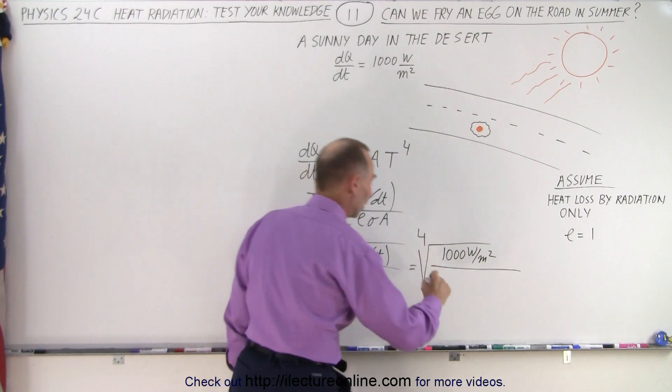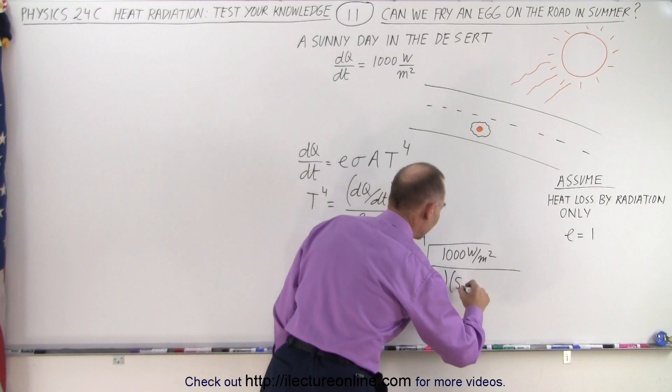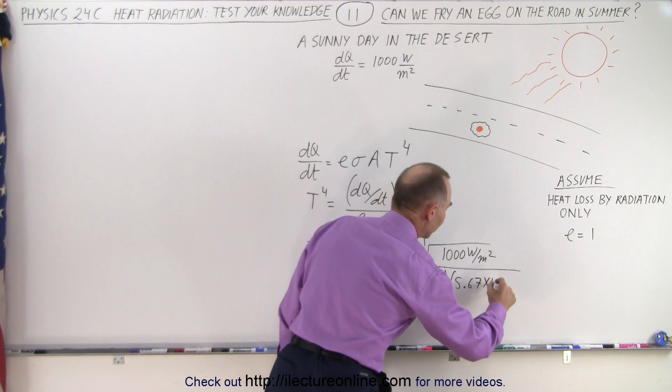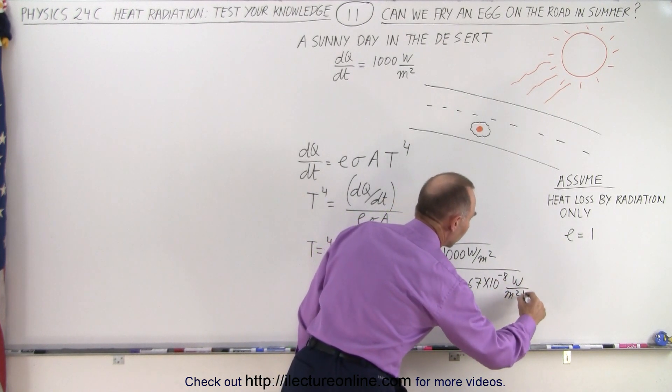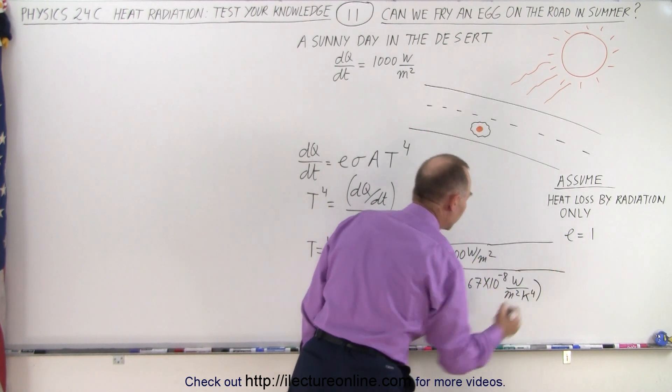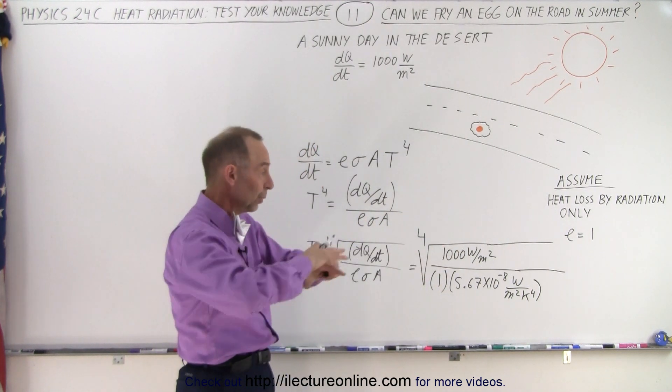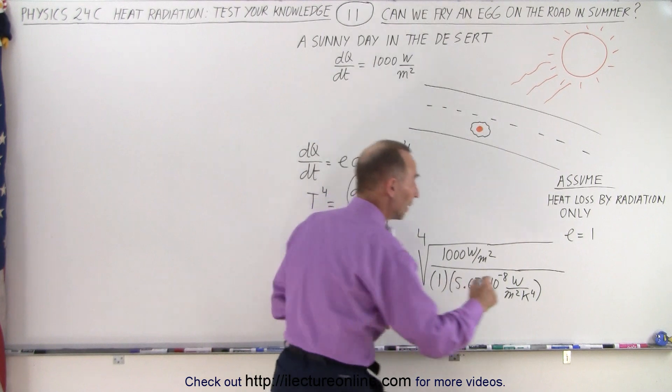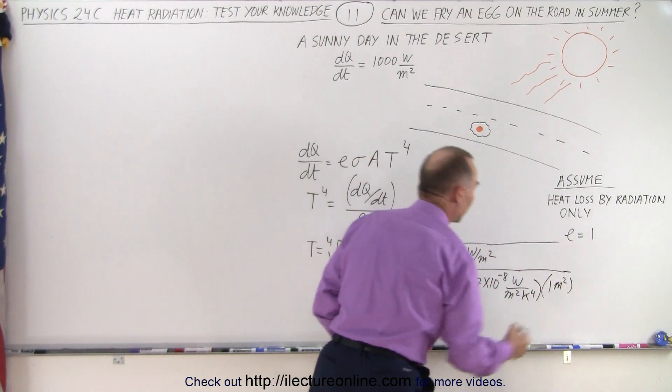All right. So that will be an outflow of 1,000 watts per square meter divided by ε, which we said was equal to 1, times σ, which is going to be 5.67 times 10 to the minus 8 watts per meter squared divided by Kelvin to the fourth power. And then the surface area - since this is 1,000 watts per square meter, we need to have the radiation going back up of 1 meter squared so that they cancel each other out.